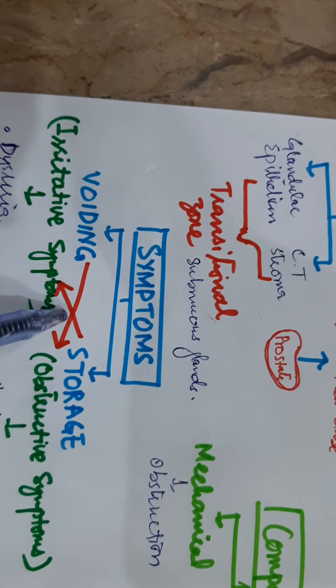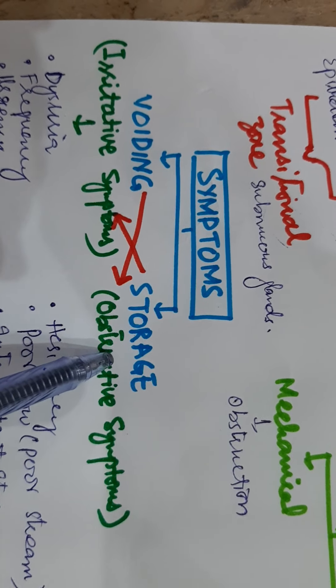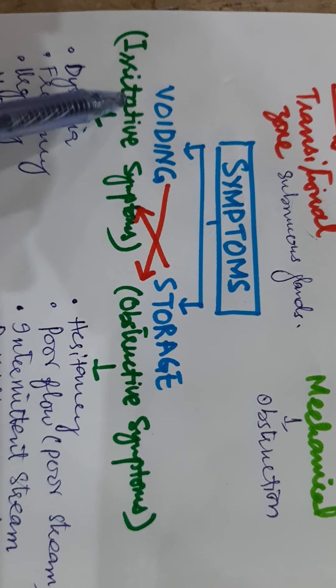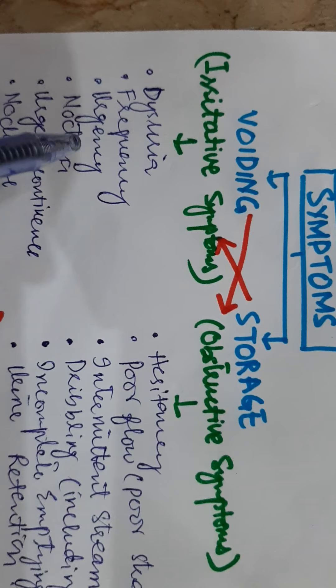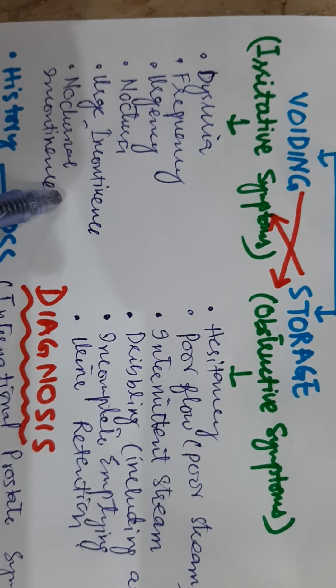Symptoms can be due to voiding difficulty and storage insufficiency. Storage insufficiency causes irritative symptoms like dysuria, frequency, urgency, nocturia, urge, and incontinence.